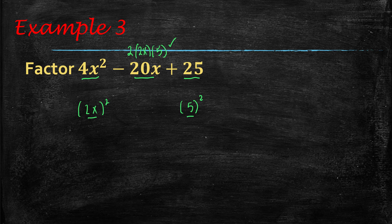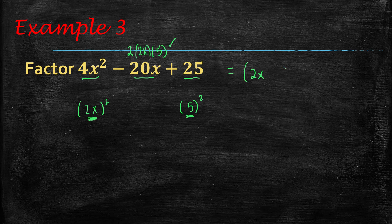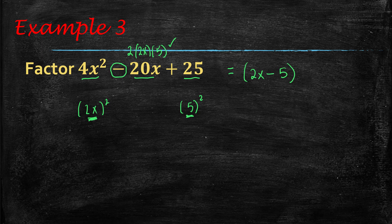Therefore, this is a perfect square trinomial, so we can quickly factor it. Put the 2x, and the 5, and the sign that goes in the middle is this sign right here. So it's going to be a minus 5, and it's just quantity squared.